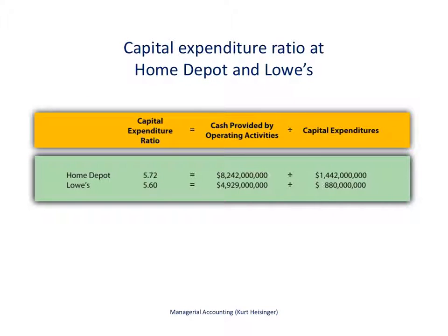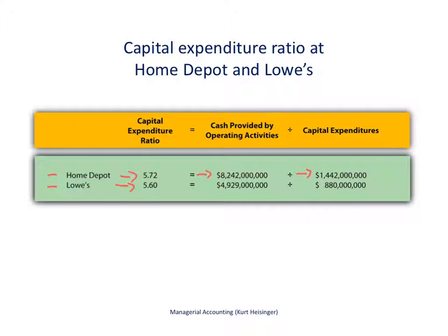For Home Depot and Lowe's, the capital expenditure ratio is 5.72 and 5.60 respectively. For Home Depot, we take cash provided by operating activities of $8,242,000,000 and divide by their investment in long-term assets such as buildings and equipment of $1,442,000,000, resulting in a ratio of 5.72. This tells us that both companies have generated plenty of cash from operating activities to cover their investments in long-term assets.